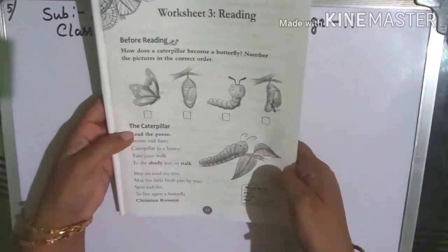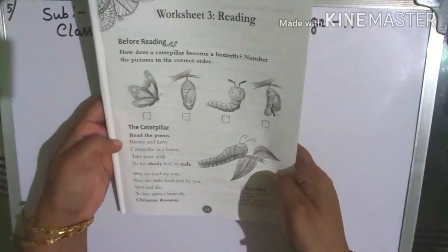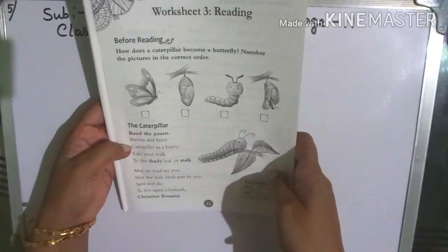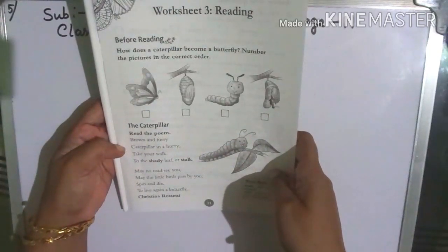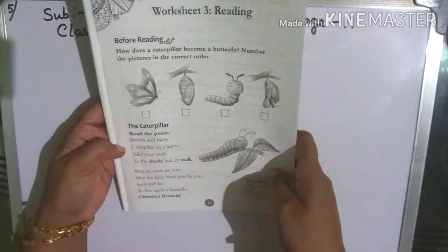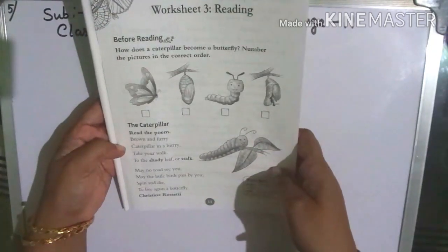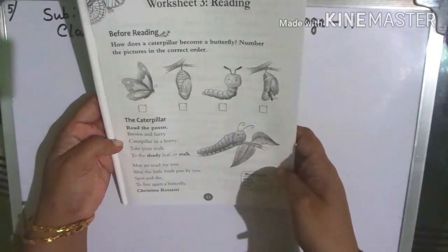Now, the caterpillar. Read the poem first. Brown and furry, caterpillar in a hurry, take your walk to the shady leaf or stalk.